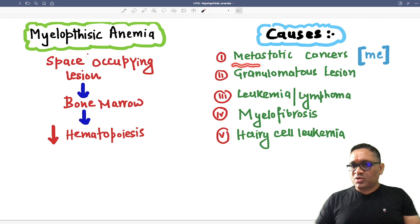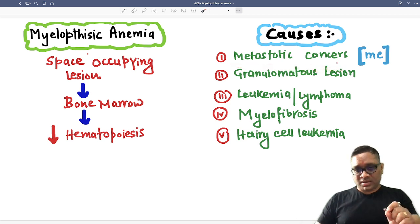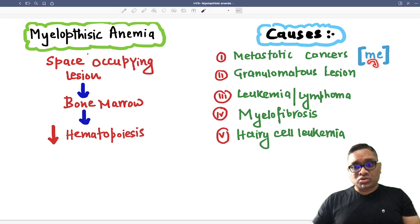So what are the causes? It can be because of metastatic cancer, and remember, it is the most common cause of myelophthisic anemia. And they are most commonly associated with breast cancer.